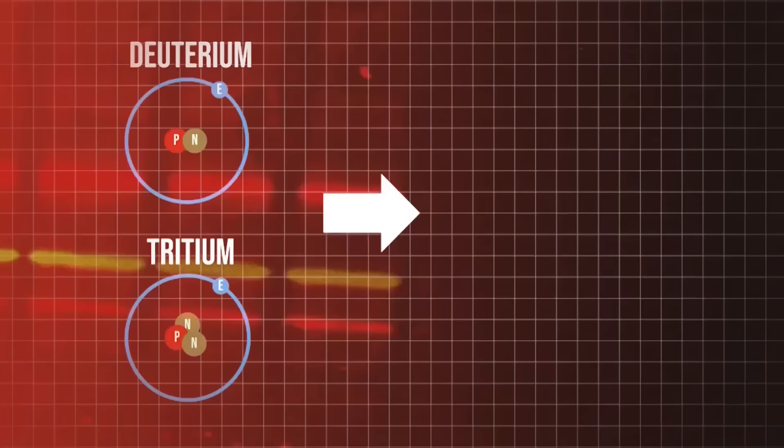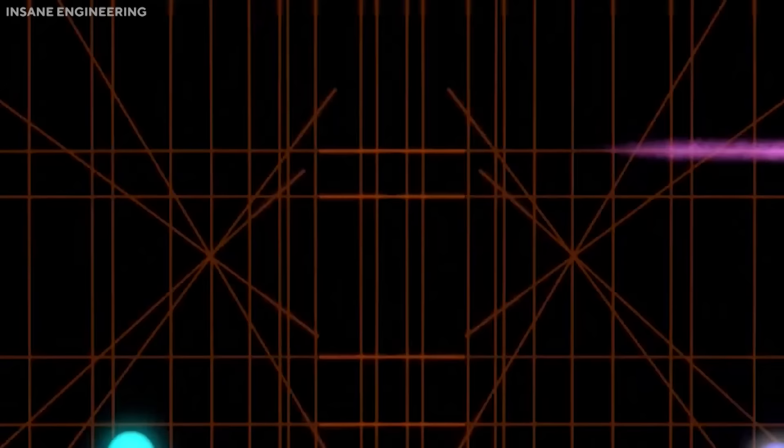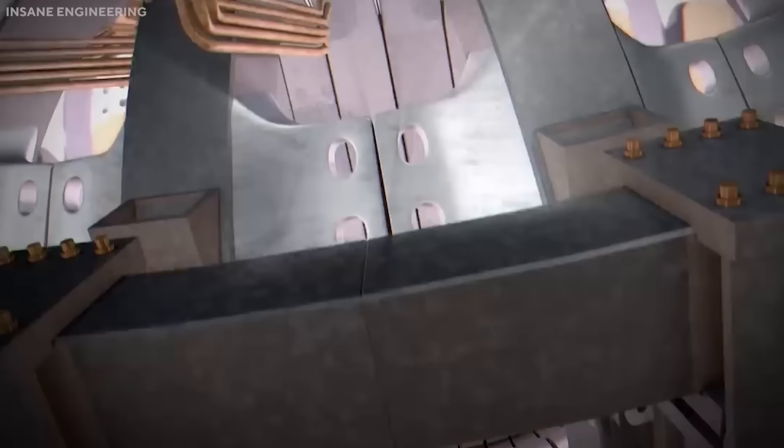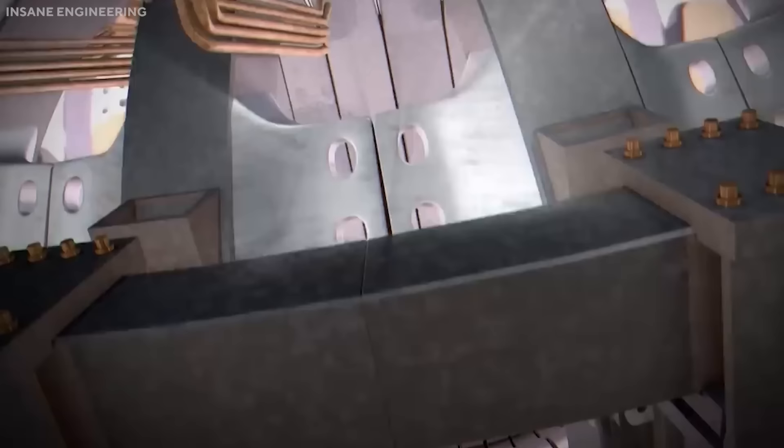ITER will also test some tritium breeding modules, which are devices that use neutrons from fusion reactions to produce more tritium from lithium. But these will not be sufficient to make ITER self-sufficient in tritium.